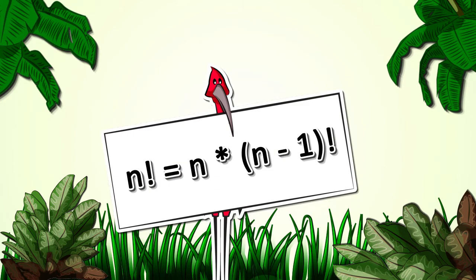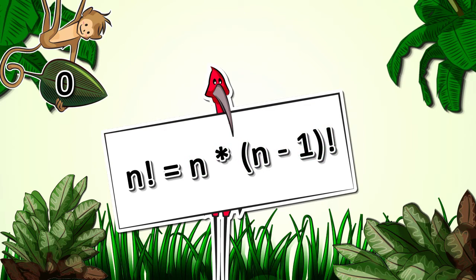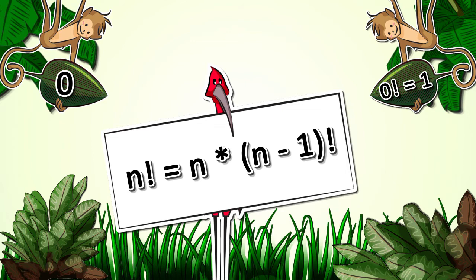We can generalize these redefinitions by writing n factorial equals n minus 1 factorial times n. In this equation, the factorial of n is defined as the factorial of n minus 1 times n. But where does this end? Mathematically, it concludes when we get to 0. 0 factorial is equal to 1. We can now logically calculate any factorial.